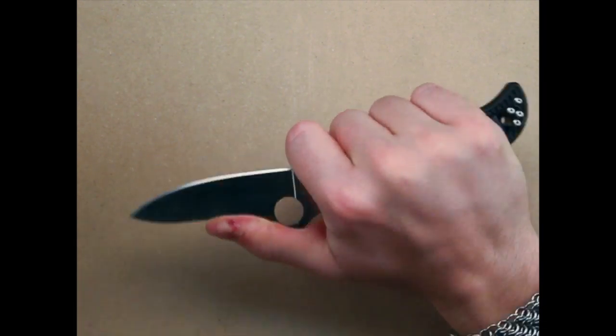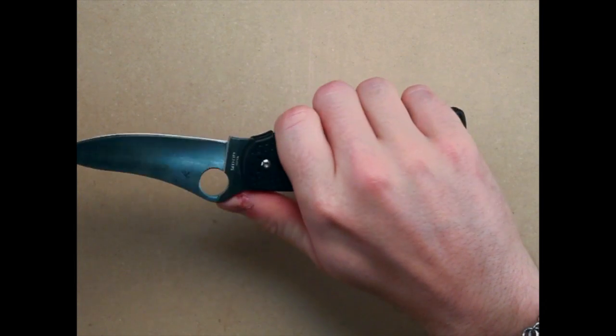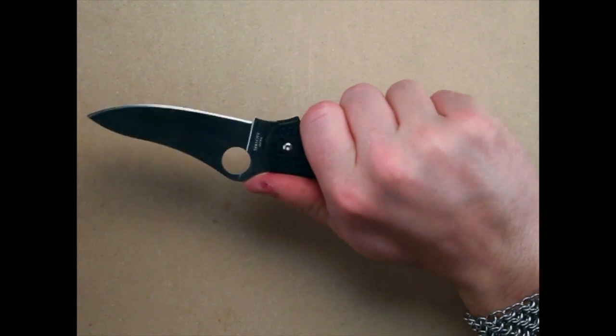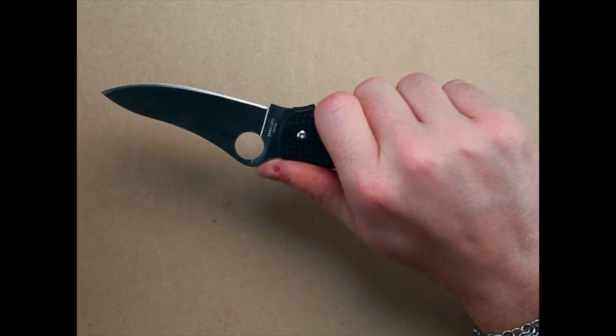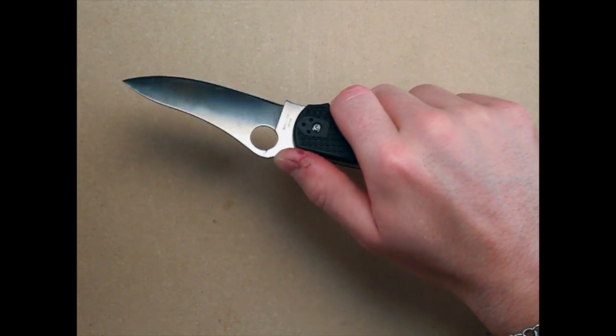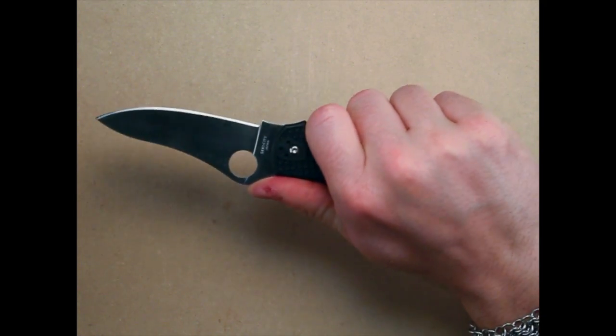You can have some more control over your knife, or you can choke back and all four fingers will fit very well on this grip behind the finger choil. With the jimping on the thumb ramp there, this knife's going nowhere.